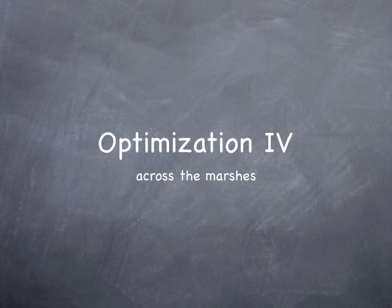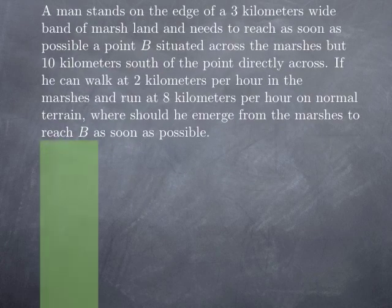We are continuing with our list of examples of optimization problems. This time we look at a problem that might look a little more complicated. A man stands on the edge of a 3 km wide band of marshland and needs to reach, as soon as possible, a point B situated across the marshes but 10 km south of the point directly across.